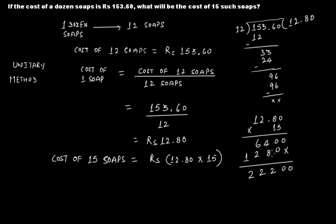So this is 8, 4, 12, 6, 2, 8 and this will be 9 and this will be 9, so this will be rupees 192.00 or simply rupees 192.